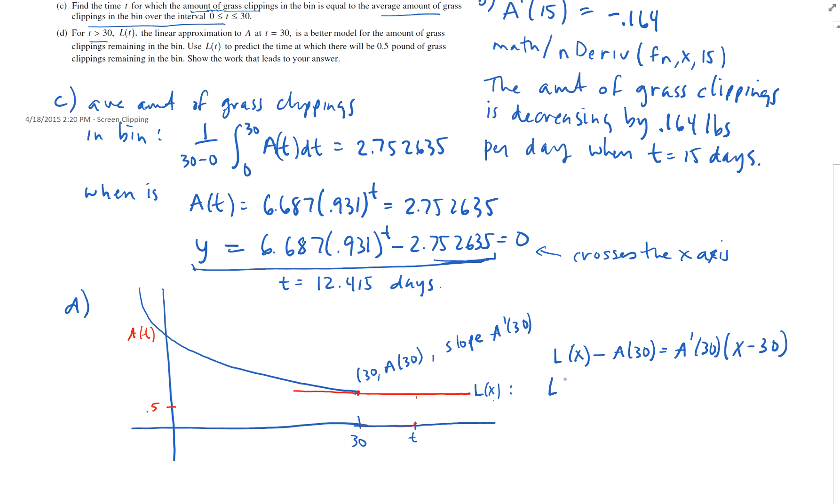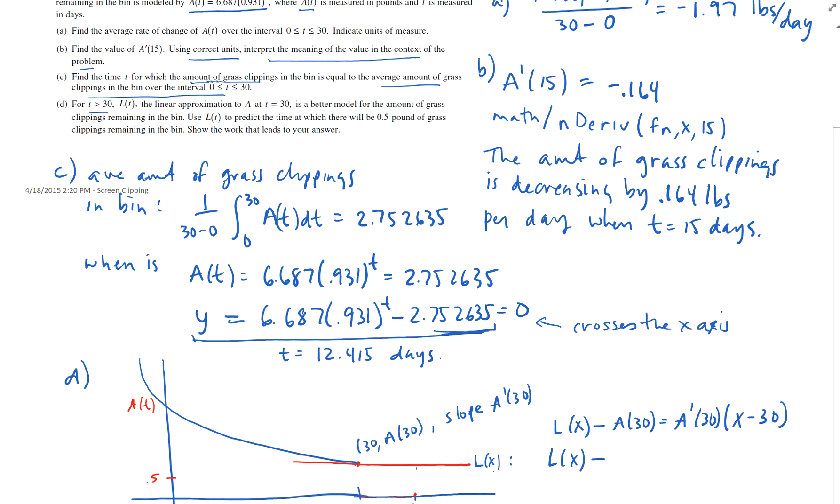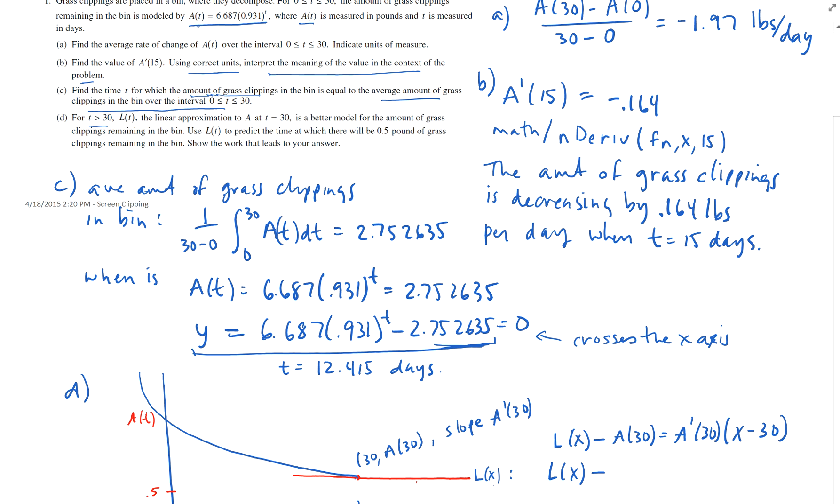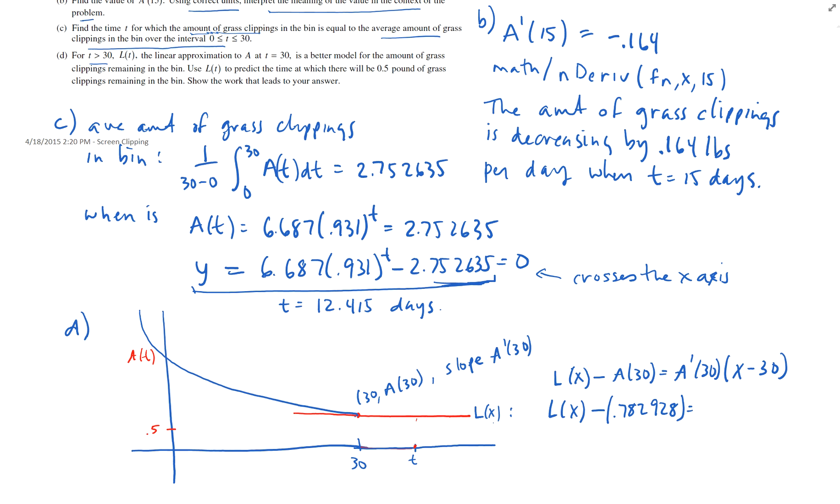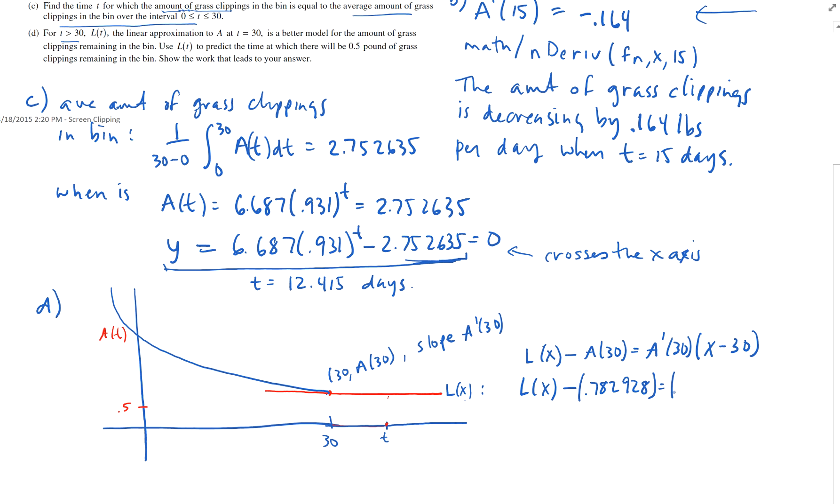So let's go L of x minus A of 30. Well, how do you find A of 30? I just plugged that into the original equation, way up here. Plugged in, I've got my calculator, I know A of 30, that's going to be, if you do that, 0.782928. A prime of 30, just like I did in part B, way up here. I'm going to do that in my calculator as well, and I get 0.055976 times x minus 30.